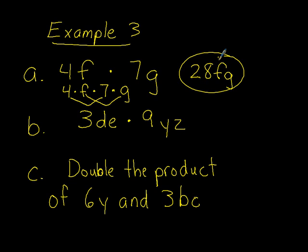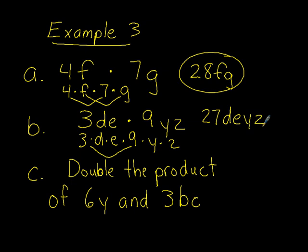Our next one, same type of thing here. You could expand the whole thing first. And then group like terms, 3 times 9 is 27. So we have 27DEYZ.